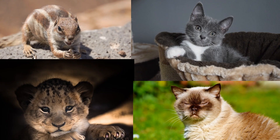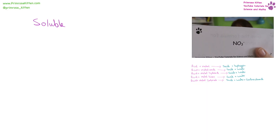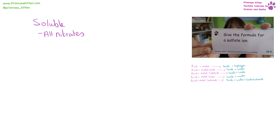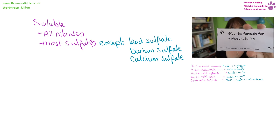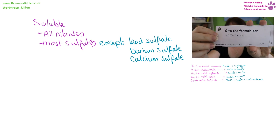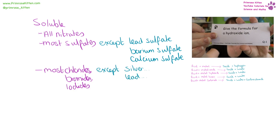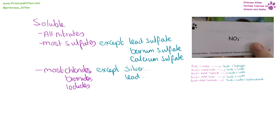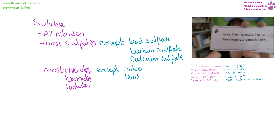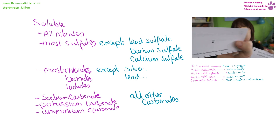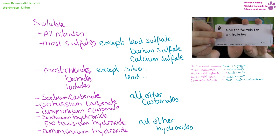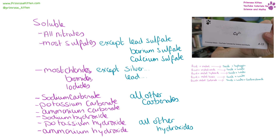A mental break: you are doing so, so well. Let's keep going — we are nearly there. When working out solubility rules, it really helps to know the formula of your ions. All nitrates are soluble. Most sulfates are soluble, apart from lead sulfate, barium sulfate, and calcium sulfate. Most halogen compounds (chlorides, bromides, iodides) are soluble, except when combined with silver or lead. Sodium carbonate, potassium carbonate, and ammonium carbonate are soluble; all other carbonates are insoluble. Sodium hydroxide, potassium hydroxide, and ammonium hydroxide are soluble; all other hydroxides are insoluble.